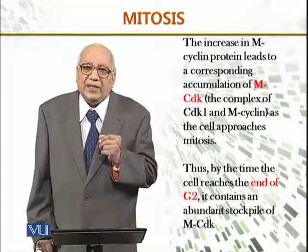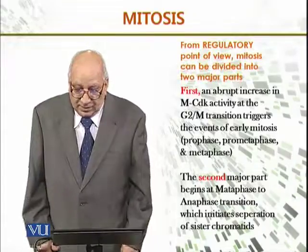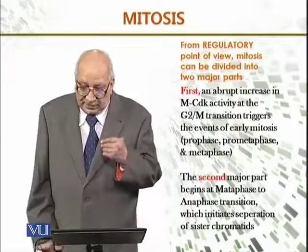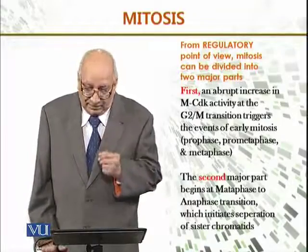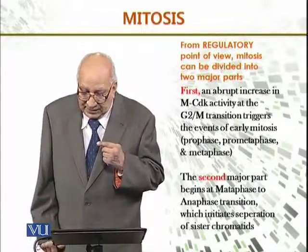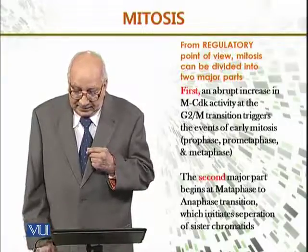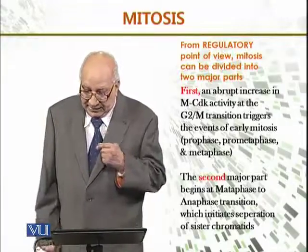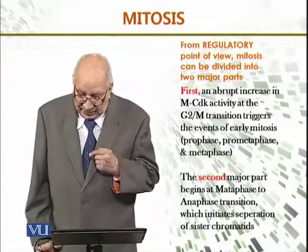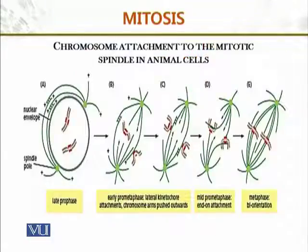Mitosis is controlled by enzymes. From a regulatory point of view, mitosis can be divided into two major parts: first, the abrupt increase in MCDK activity at the G2 transition, and second, the major part beginning at the metaphase-to-anaphase transition, which initiates the separation of the sister chromatids.